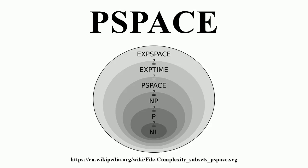In this system, there is an all-powerful prover trying to convince a randomized polynomial time verifier that a string is in the language. It should be able to convince the verifier with high probability if the string is in the language, but should not be able to convince it except with low probability if the string is not in the language. PSPACE can also be characterized as the quantum complexity class QIP, and is equal to PCTC — problems solvable by classical computers using closed time-like curves — as well as to BQPCTC, problems solvable by quantum computers using closed time-like curves.